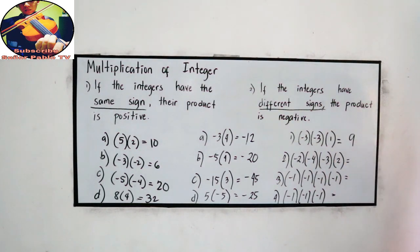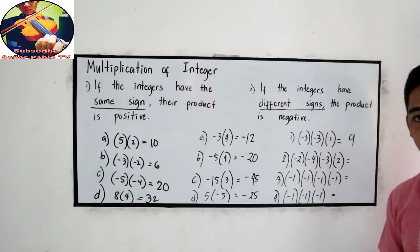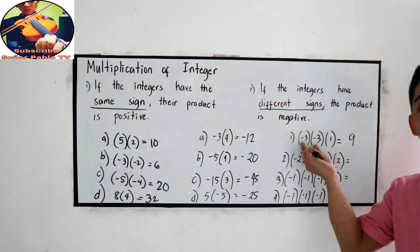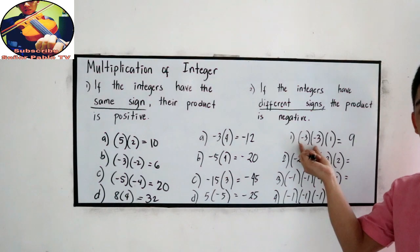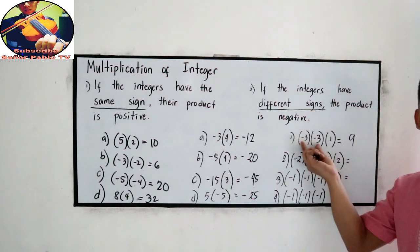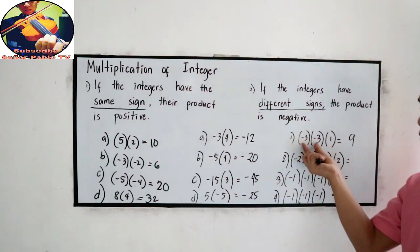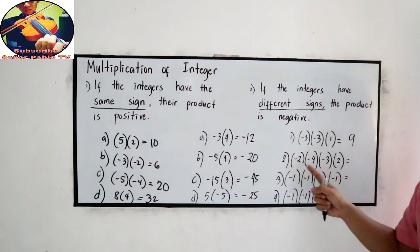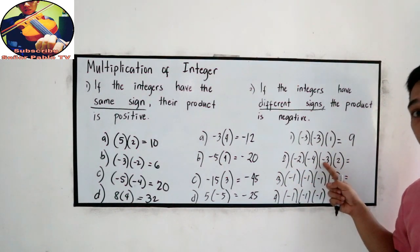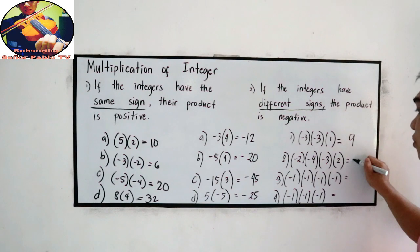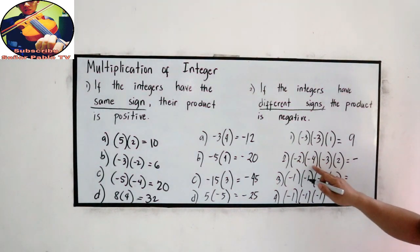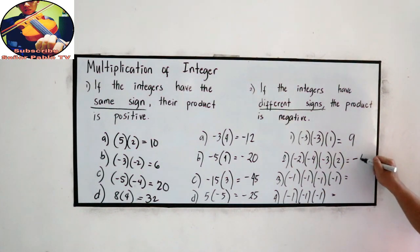In number 1, we count the negatives. The number of negative signs is 2 — that is even — so the answer is positive. For number 2: negative 2 times negative 4 times negative 3 times 2 — we count 1, 2, 3 negatives — that is odd, so the answer is negative. 2 times 4 is 8, times 3 is 24, times 2 is 48, so negative 48.